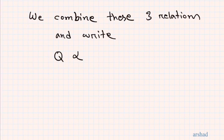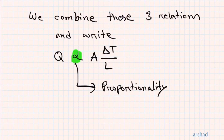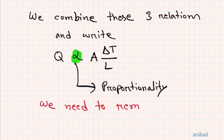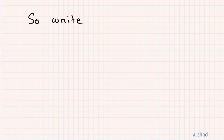Combining the three relations, we write Q is proportional to (ΔT / L) × A. The proportionality sign means the quantities on either side change in the same ratio. However, a proportionality relation is not an equation — it tells us how parameters are related but doesn't allow us to actually calculate the amount of heat transferred.